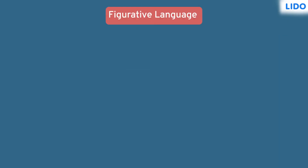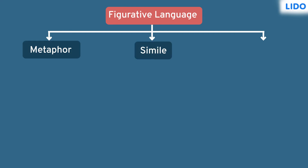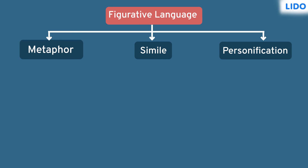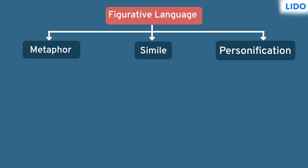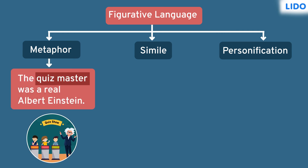And lastly, there is figurative language. Figurative language uses an ordinary sentence to refer to something without directly stating it. There were three figuratives used in Raj's essay: metaphor, simile and personification. A metaphor compares two things or people without using as or like. For example, the quiz master is compared to Albert Einstein.